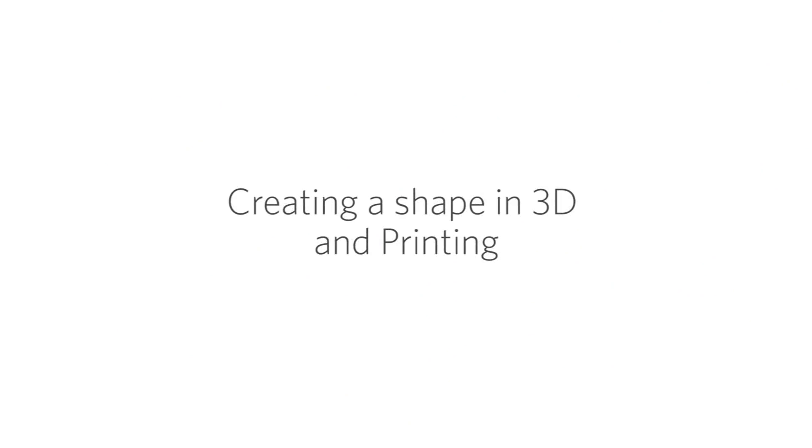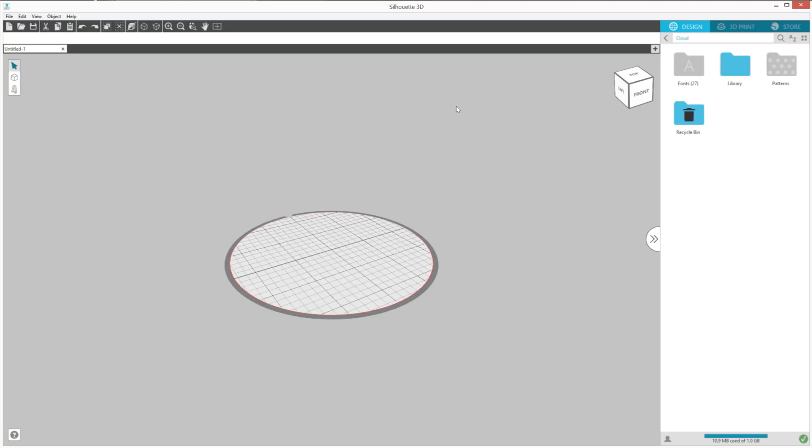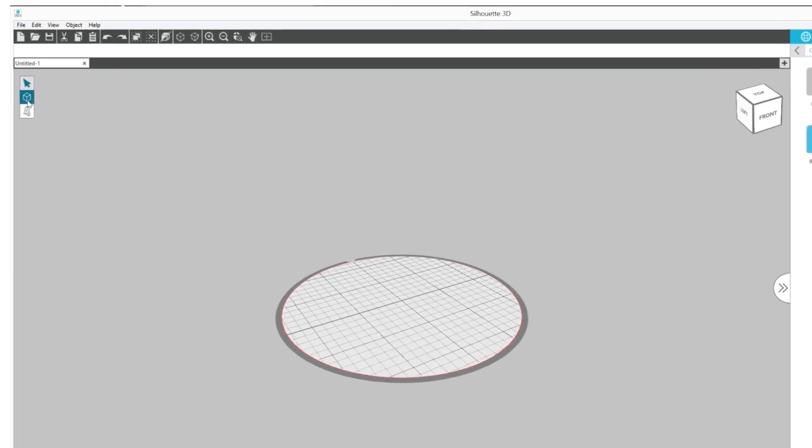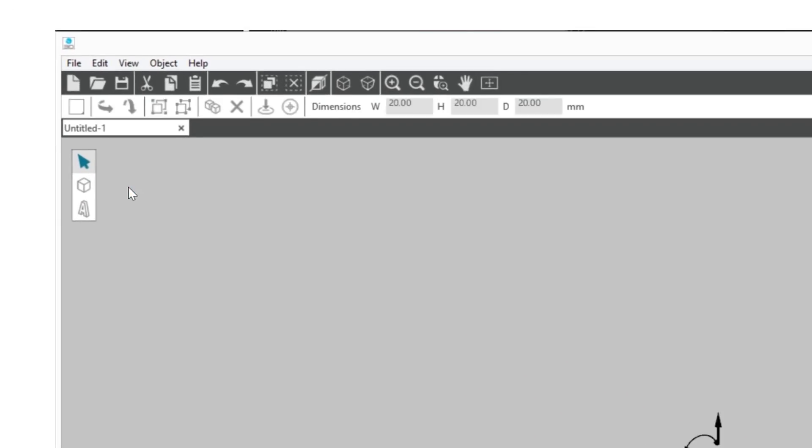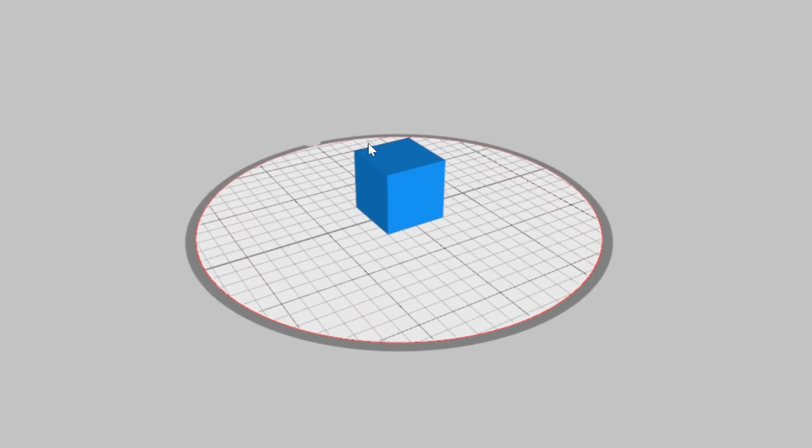Creating a shape in 3D and printing. Next, create a shape to test print in the Design tab of Silhouette 3D. Click on the Shape tool and select the cube. A cube will be placed in the print area.